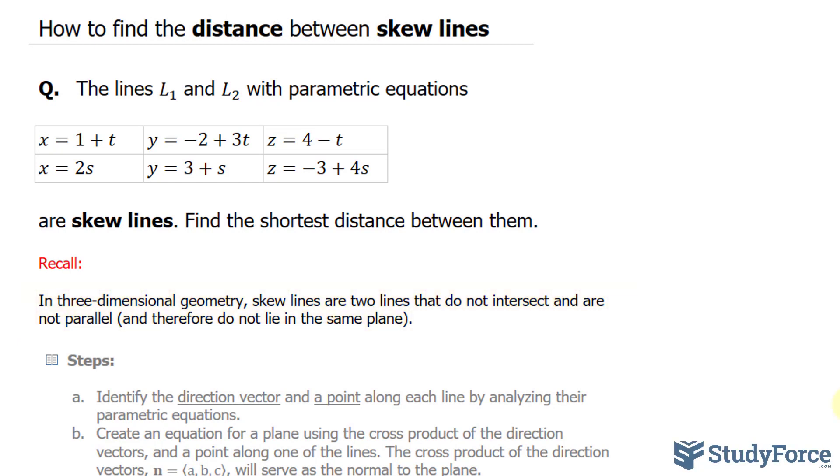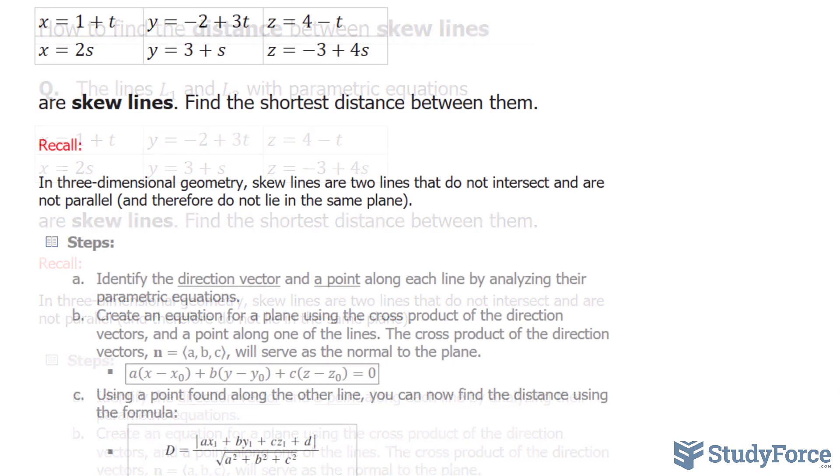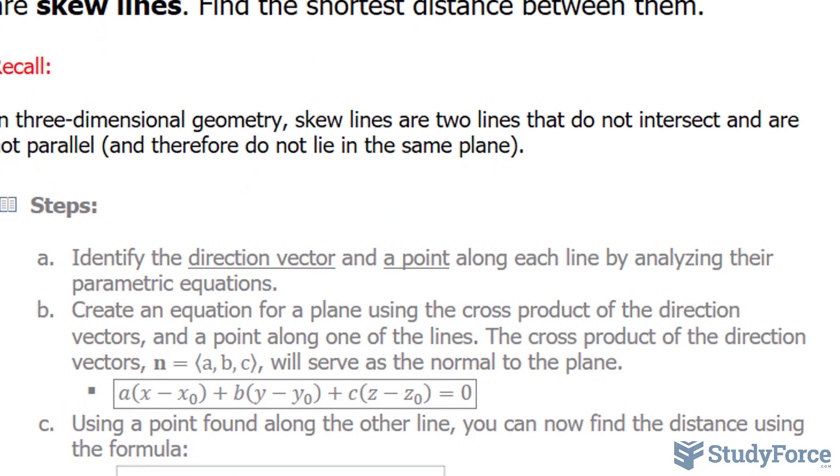So with that said, to do this problem we have to go back to what we did in one of our previous videos where we found the distance between two parallel planes. The same sort of idea, concept, and formula. The steps to doing this are outlined below, and in step A we have to identify the direction vector and a point along each line by analyzing their parametric equations.